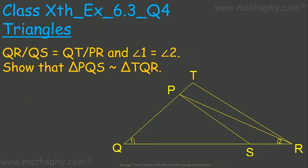This question says QR over QS is equal to QT over PR, and angle 1 is equal to angle 2. We need to show that triangle PQS is similar to triangle TQR.